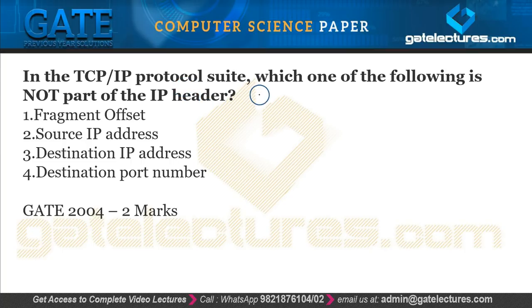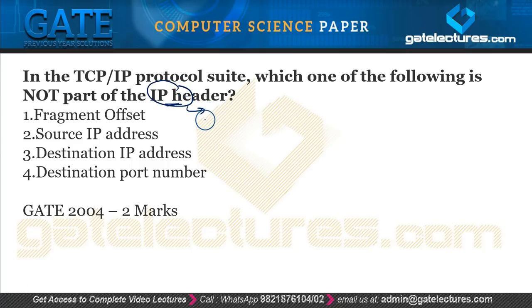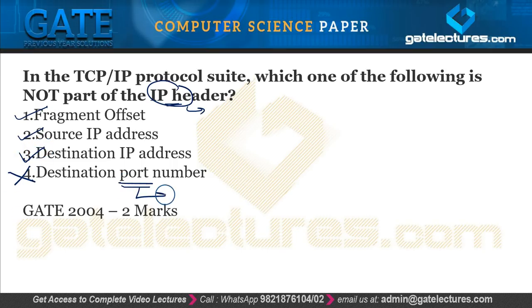In the TCP/IP protocol suite, which of the following is NOT part of the IP header? The IP header contains a fragment offset, source IP address, and destination IP address, but it does NOT contain a destination port number. The destination port number is in the TCP header, not the IP header. So the correct answer is option 4.